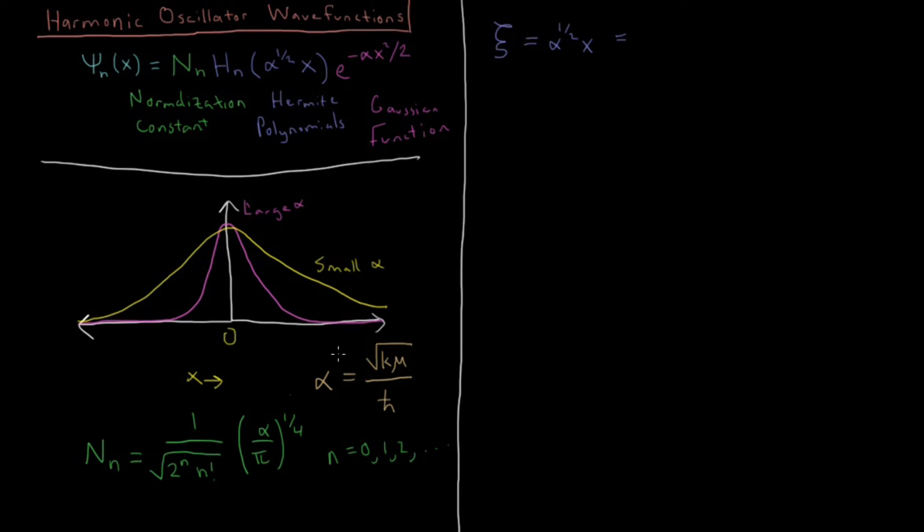And if we substitute in what the value of alpha is, in terms of our original fundamental constants, that would be k times mu over h-bar squared, all of that to the 1 fourth. And then tacking on an x, our bond's displacement from equilibrium, we get this. So this is kind of a scaled position quantity here.